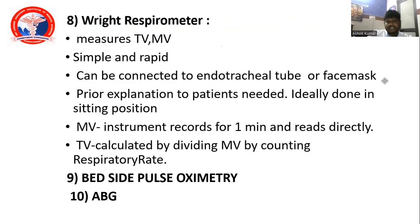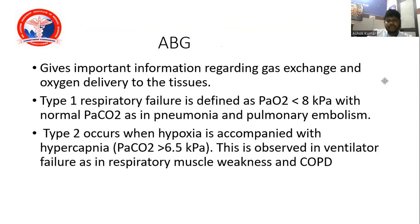Wright respirometer measures tidal volume and minute ventilation. It is simple and rapid, can be connected to the endotracheal tube or face mask. Ideally measured in sitting position; minute volume recorded for one minute; tidal volume calculated by dividing minute volume by respiratory rate. Arterial blood gas analysis is important regarding oxygenation and oxygen delivery. Type one respiratory failure: PaO2 less than 8 kPa with normal PaCO2 — seen in pneumonia. Type two respiratory failure: hypoxia combined with hypercapnia — PaCO2 more than 6.5 kPa — seen in ventilatory failure, respiratory muscle weakness.